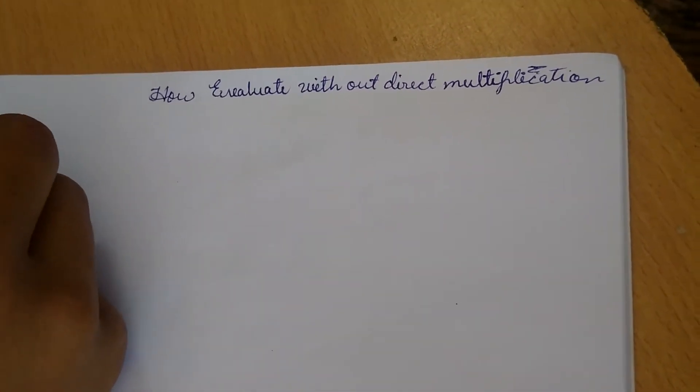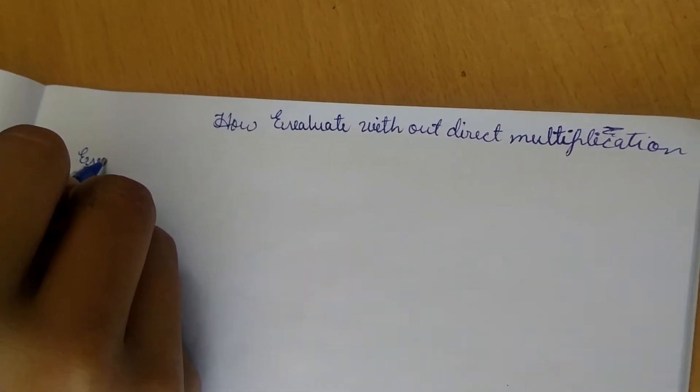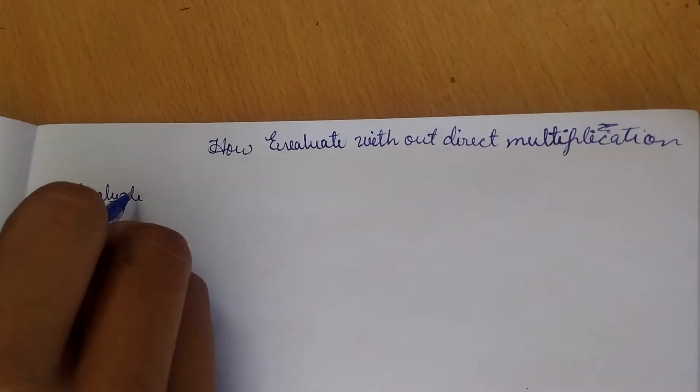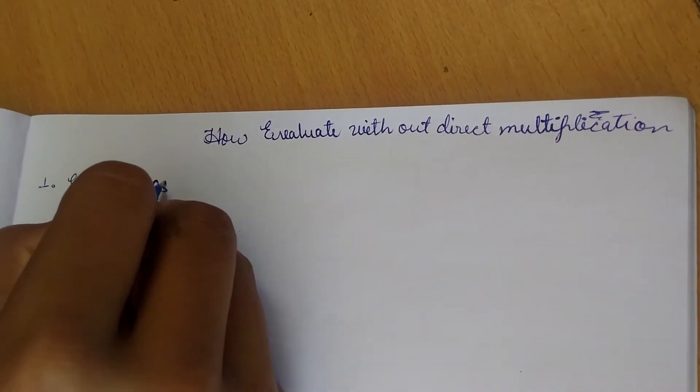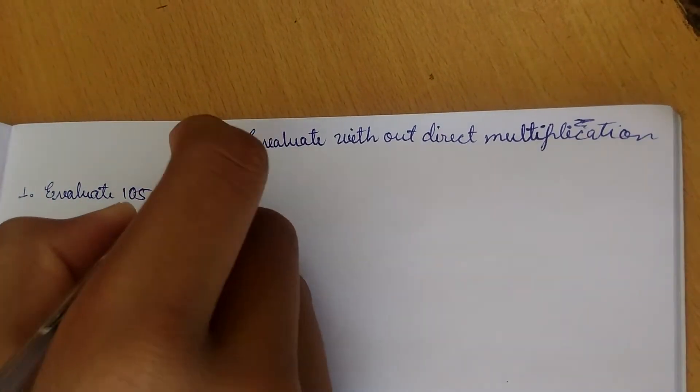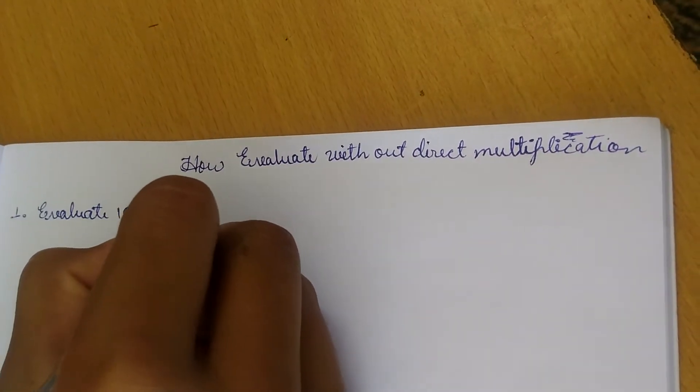I'm taking my first question as: evaluate 105 into 106 without direct multiplication.